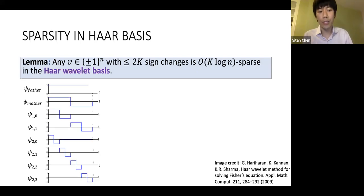In the so-called Haar wavelet basis, an example for domain size 8 is shown here. Actually, any such vector v is going to be k log n sparse, where k is roughly the number of sign changes.